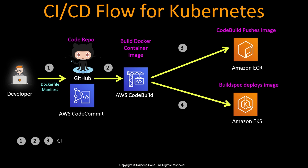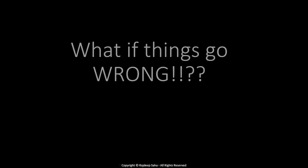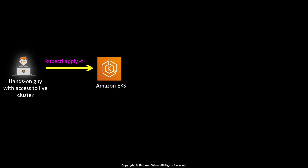Then CodeBuild deploys the manifest file into a running Kubernetes cluster — in this case Amazon EKS. Steps one, two, and three are CI or continuous integration, and step four is CD or continuous deployment.